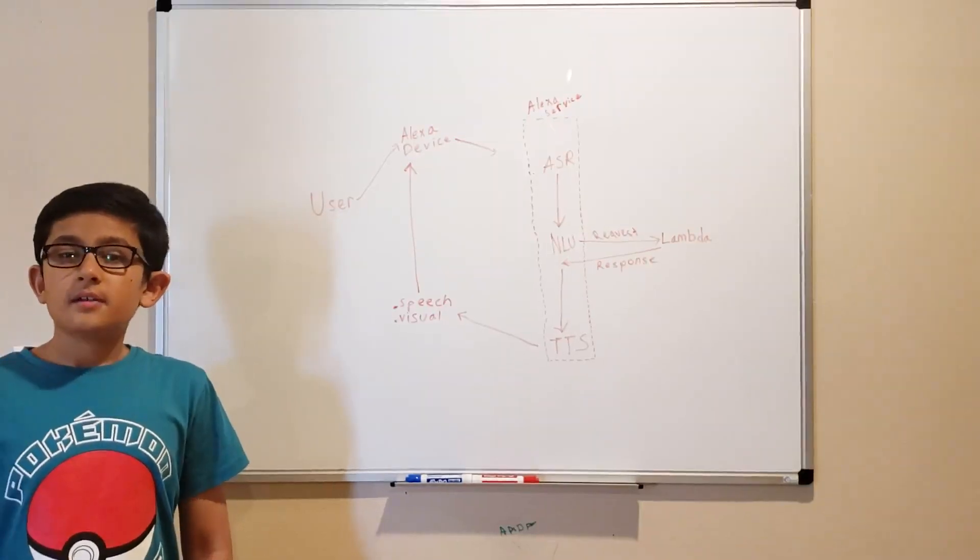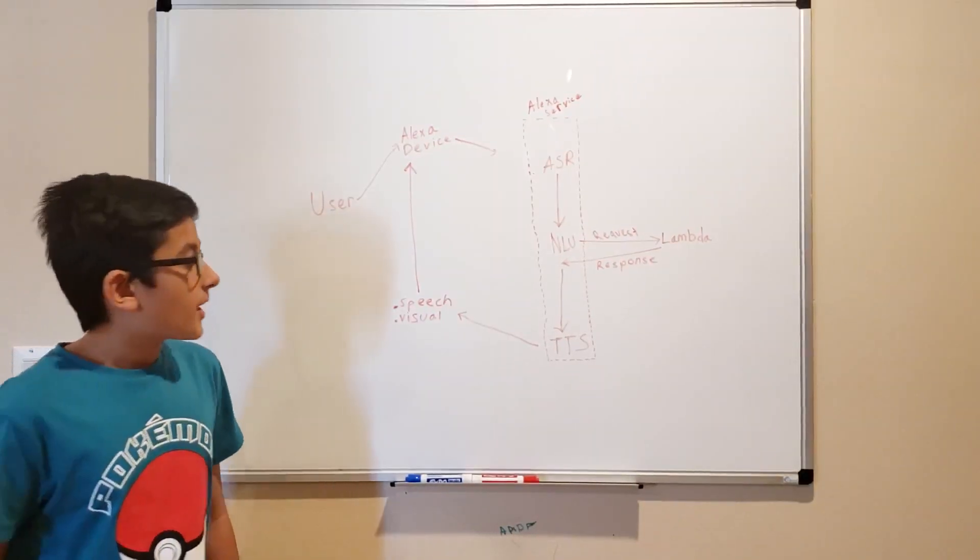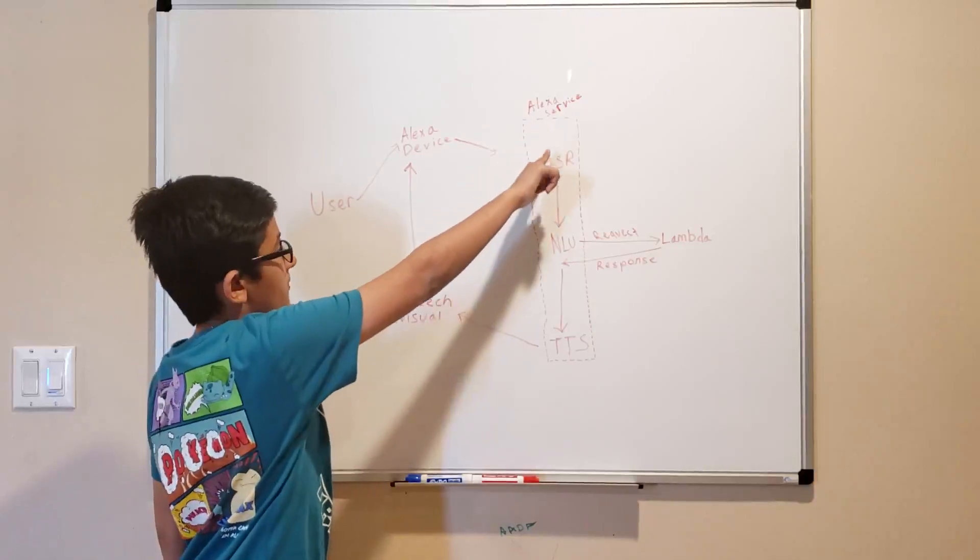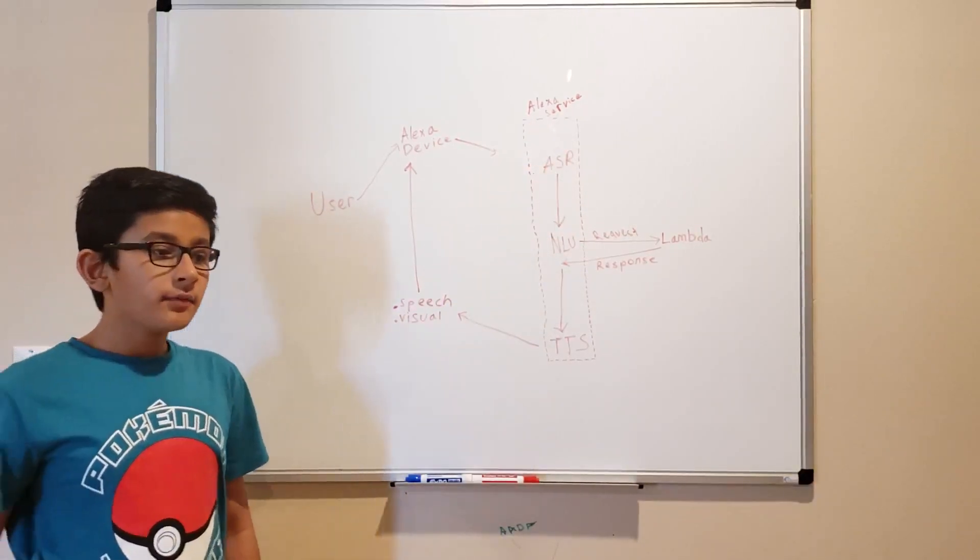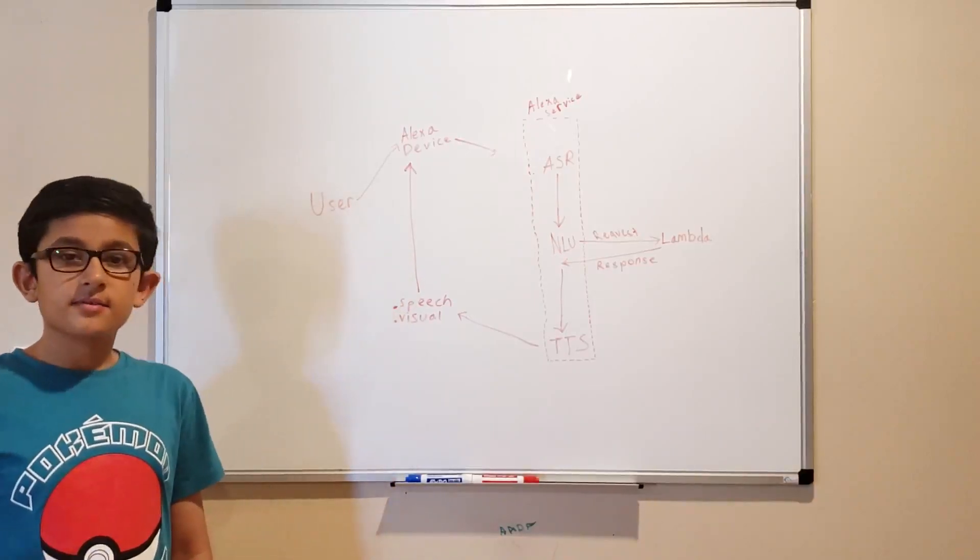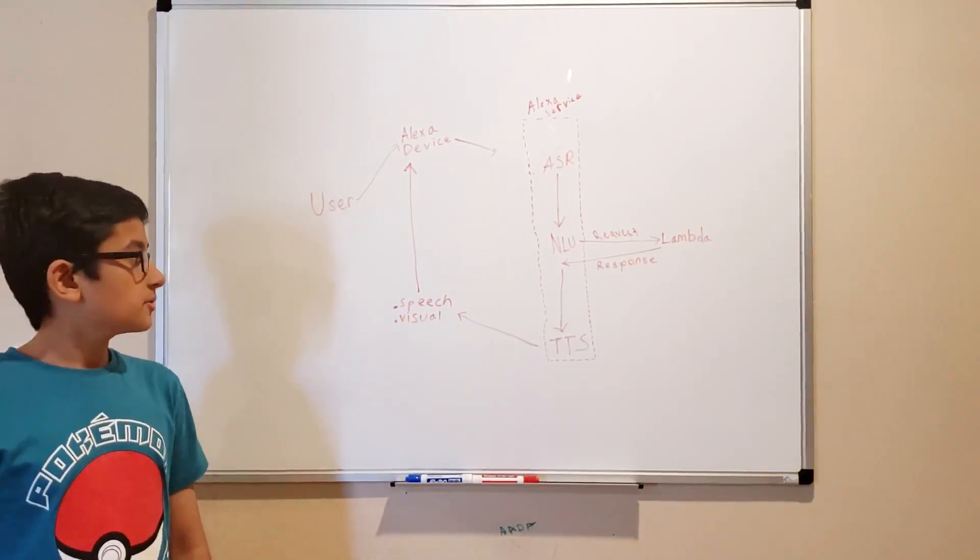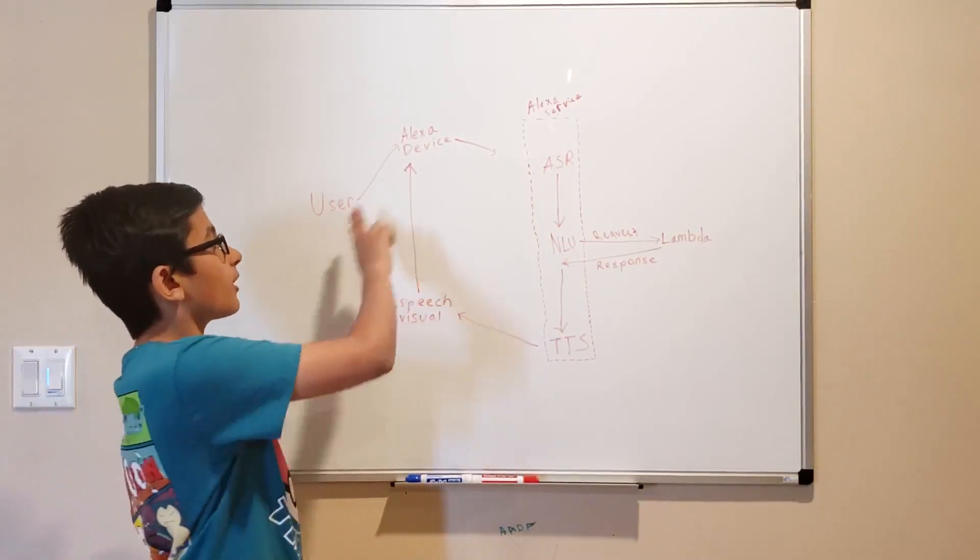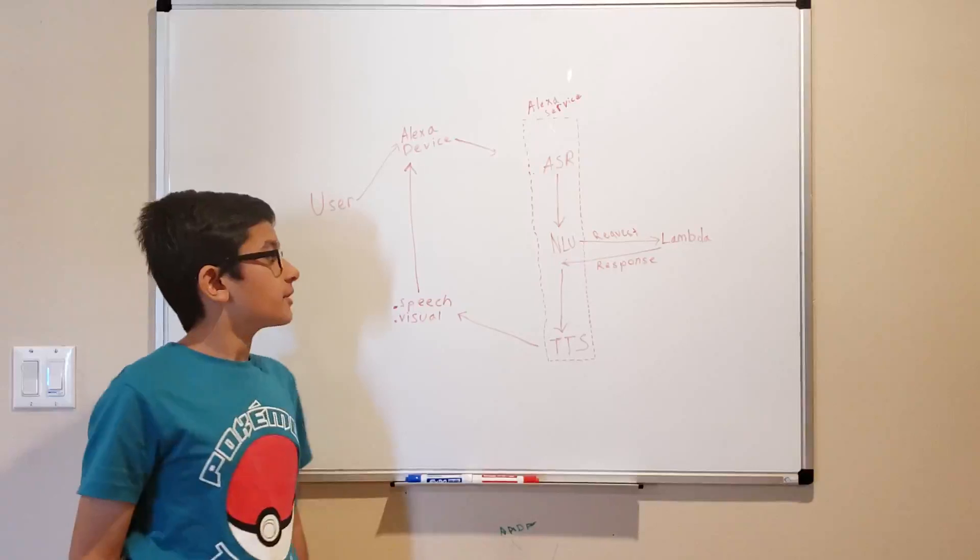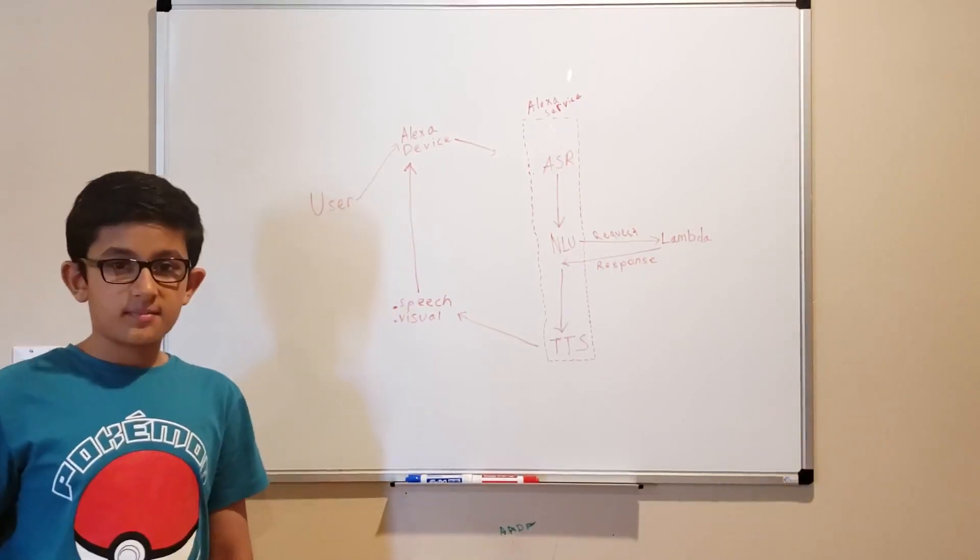And then you said, sure. That sure command goes through all of this and goes to NLU. And then NLU figures out that since you said sure, you want to spin again. Now if you had said no thank you, it would have gone through this process again and NLU would have figured out you don't want to spin again.